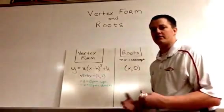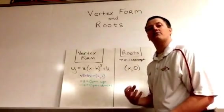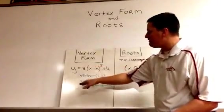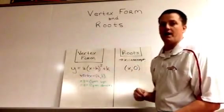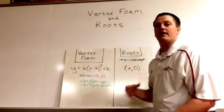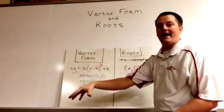The a value tells us a few things. The main one for us right now is that a positive a value is telling us that the graph is going up, that it opens up. A negative a value tells us that the graph is going to open down.